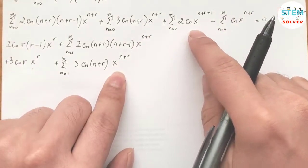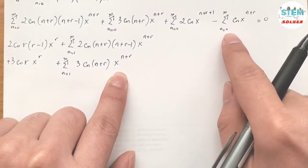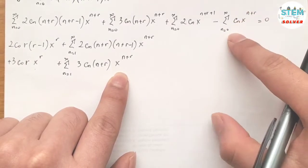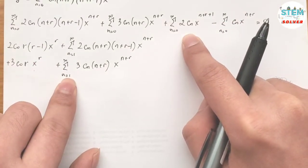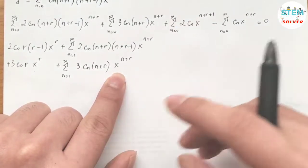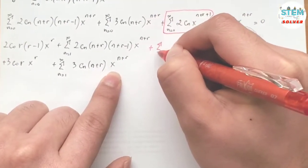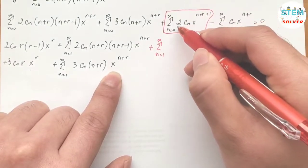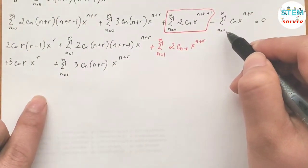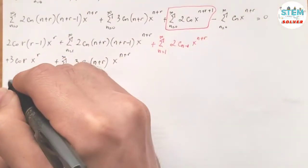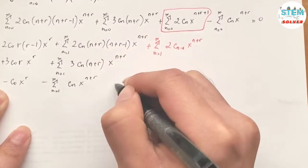For the third term, since it already starts at xʳ⁺¹ when n = 0, we re-index it by shifting n → n−1, so it starts at n = 1 to ∞: Σ from 1 to ∞ of 2cₙ₋₁ xⁿ⁺ʳ. For the last term, plug in 0: −c₀ xʳ − Σ from 1 to ∞ of cₙ xⁿ⁺ʳ = 0.